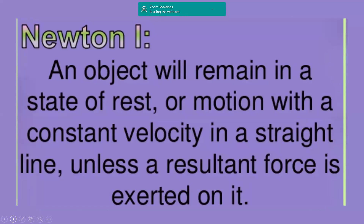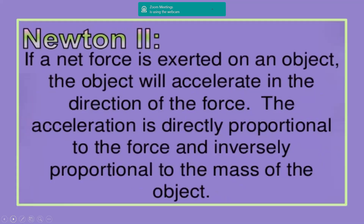This is Newton's first law, as we discussed before. Newton's second law: if a net force is exerted on an object, the object will accelerate in the direction of the force. We say F equals m times a. The acceleration is directly proportional to the force and inversely proportional to the mass of the object. The acceleration equals force over mass.